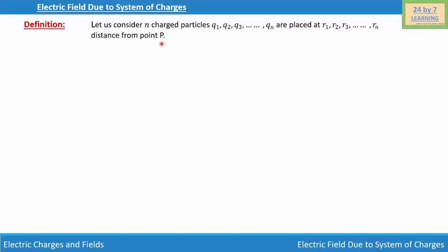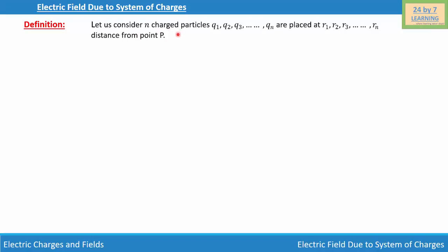In order to explain this, I'm going to use this information to draw a figure. Here is my figure where P is the point, and what we are trying to do is find the magnitude of the electric field at point P due to all these charge particles Q1, Q2, Q3, Q4 ... Qn, which are R1, R2, R3 ... Rn distance from point P.